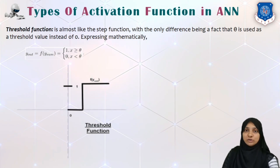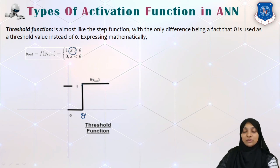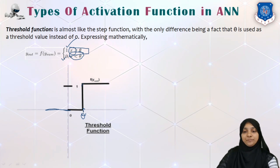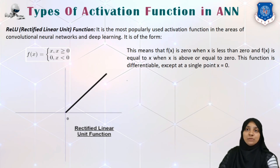Next is the threshold function, which is a slight variation of the step function. Instead of a step at zero, we have a step at some threshold theta. Any X value greater than theta gives output 1; any X value less than theta gives output 0. So for any value less than theta the output is 0, and for any value greater than or equal to theta the output is 1. This is a widely used function.